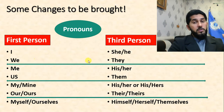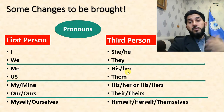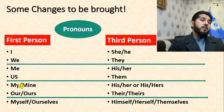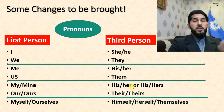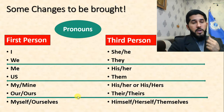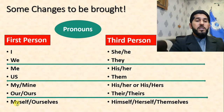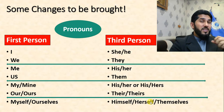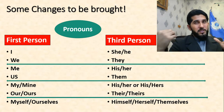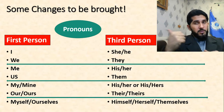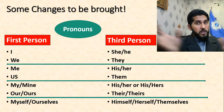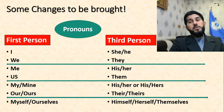First person pronouns are changed to third person. In the subjective case, 'I' becomes 'he,' 'she,' or 'they.' In the objective case, 'me' becomes 'him,' 'her,' or 'them.' Possessive adjectives: 'my' becomes 'his' or 'her'; 'our' becomes 'their.' For reflexive pronouns, 'myself' becomes 'himself' or 'herself' depending on the speaker's gender, and 'ourselves' becomes 'themselves.'